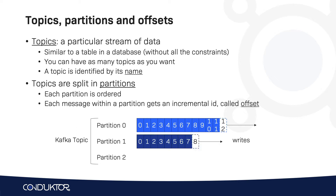Partition 1 is also part of our Kafka topic, and this one has offsets going from 0 all the way to 7, and the next message to be written is number 8. Partition 2 has message offsets going from 0 all the way to 9, and the next message to be written is number 10. As we can see in this example, the partitions are independent — we will be writing to each partition independently at its own speed. The offsets in each partition are independent, and a message has a coordinate of a topic name, a partition ID, and an offset.